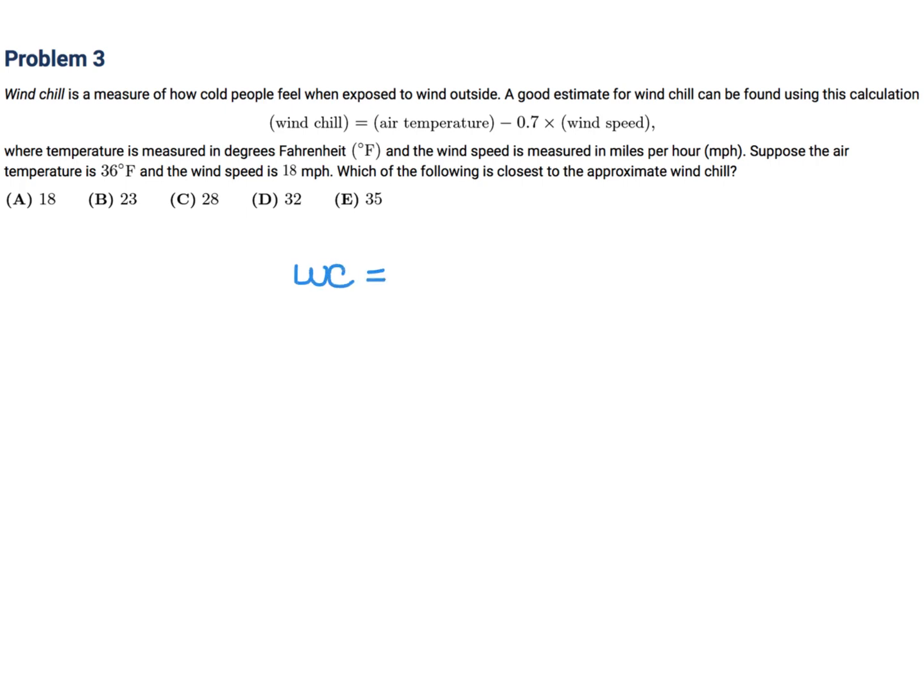Okay, so let's use this formula. Windchill is air temperature. So that's going to be 36 minus 0.7 times the wind speed, which is 18. And I think that's it. So that's going to be what? 12.6. And then that would be 23.4. So they're saying, oh closest to, okay I got it. So just approximating and that would be B.